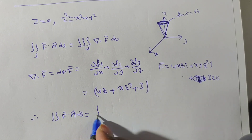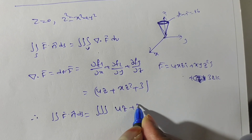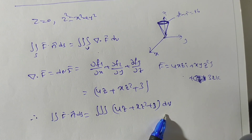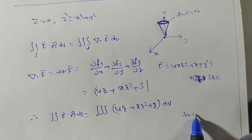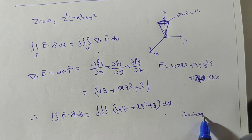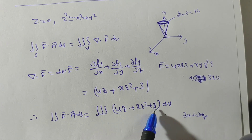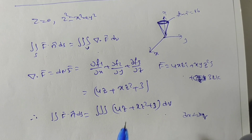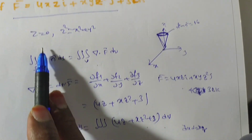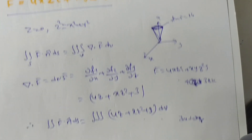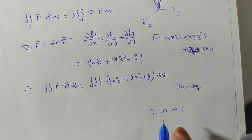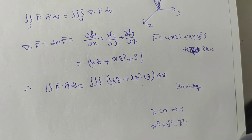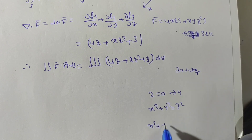So the double integral F·n̂ dS equals the triple integral over V of (4z + xz² + 3) dV, where dV = dx dy dz. We need to find the limits. The z-limits come directly from the given planes: z = 0 to z = 4. Next we need the x and y limits from the cone x² + y² = z².